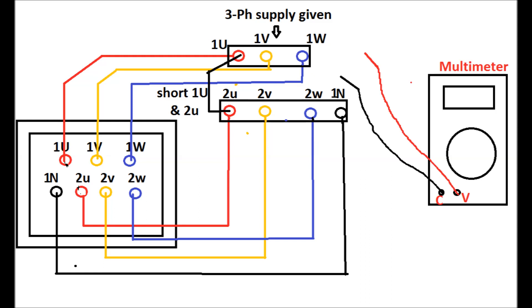Color-coded wire is connected to the primary winding and from the secondary winding and neutral, similar to the YND1 arrangement. Three-phase supply has been given to 1U, 1V, and 1W, terminal 1U and 2U has been shorted, and by means of the multimeter different voltages have been measured.